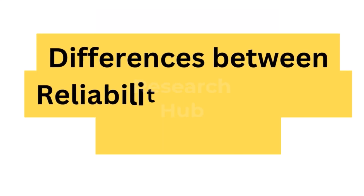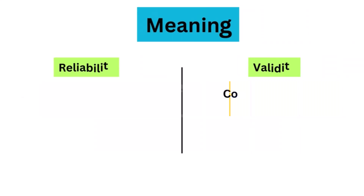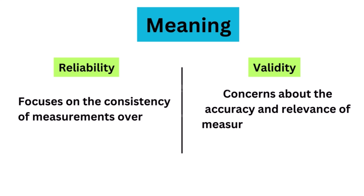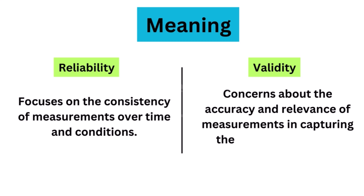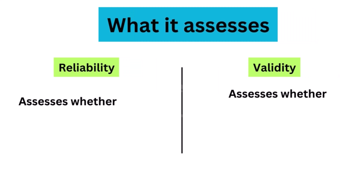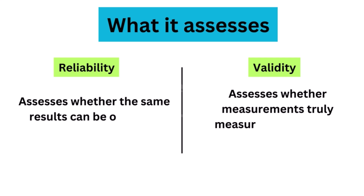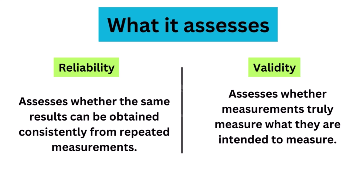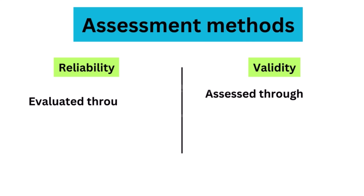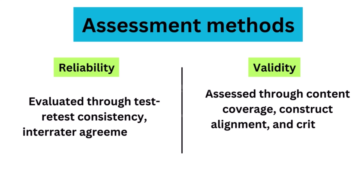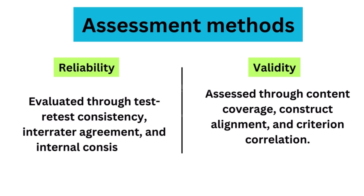Let's delve into the differences between reliability and validity. First, regarding meaning: reliability focuses on the consistency of measurements over time and conditions, while validity concerns the accuracy and relevance of measurements in capturing the intended concept. Second, what it assesses: reliability assesses whether the same results can be obtained consistently from repeated measurements, while validity assesses whether measurements truly measure what they are intended to measure. Third, assessment methods: reliability is evaluated through test-retest consistency, inter-rater agreement, and internal consistency; validity is assessed through content coverage, construct alignment, and criterion correlation.